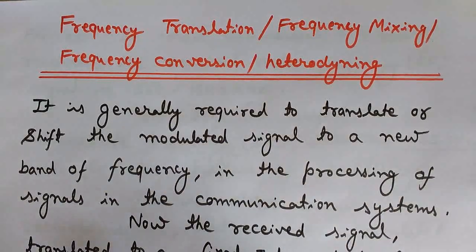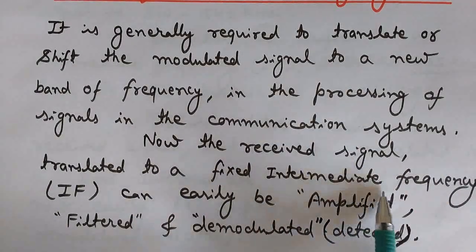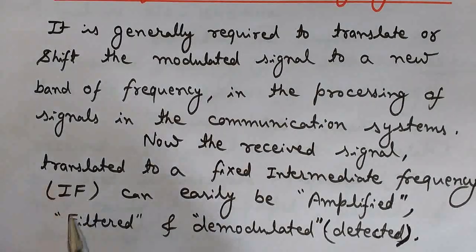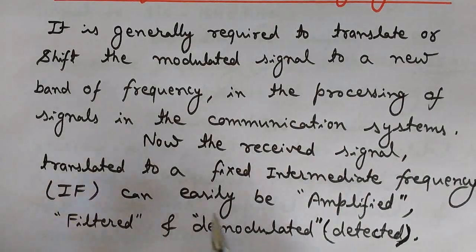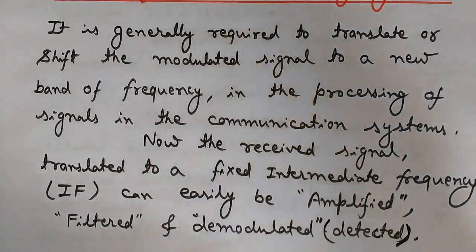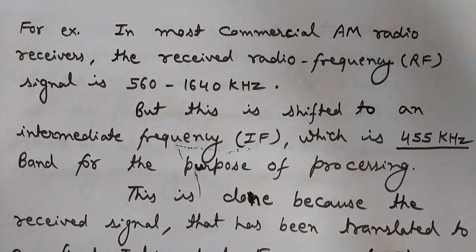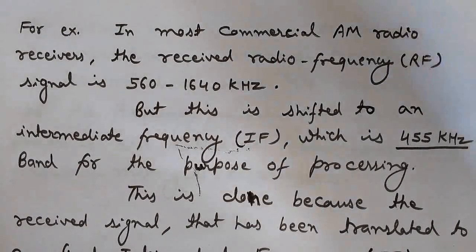So it is generally required to translate or shift the modulated signal to a new band of frequency in communication systems. This received signal is translated to a fixed intermediate frequency — in short, written as IF. This intermediate frequency can then be easily amplified, filtered, and demodulated. Now let us understand the purpose of superheterodyning — that is, frequency translation or frequency mixing — with the help of a practical example.